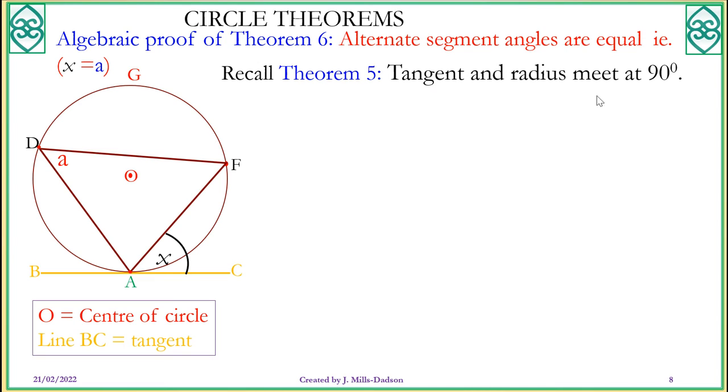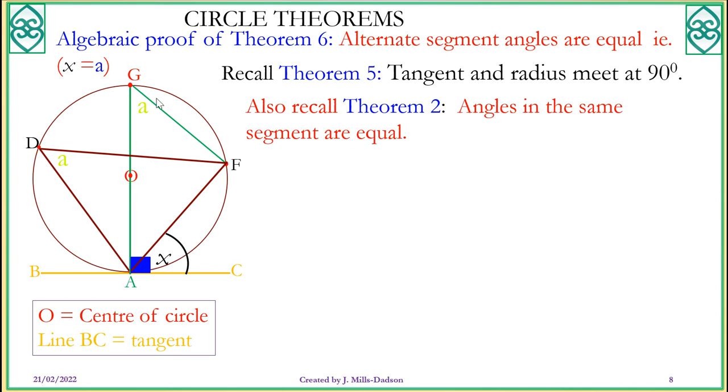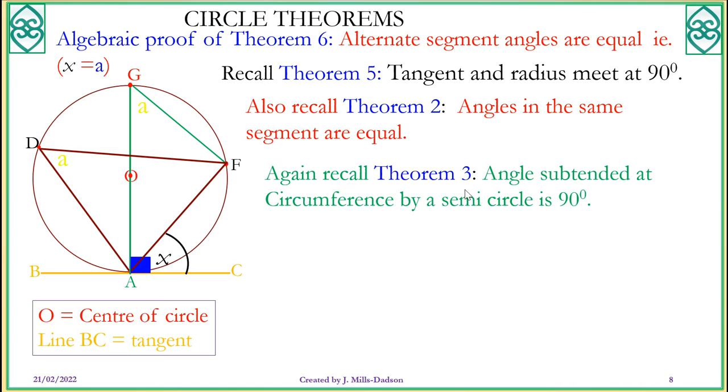First, from theorem 5, tangent and radius meet at 90 degrees. So this is the radius and I've extended it to form a diameter. So the radius and the tangent, this must be 90 degrees. Now I'm going to join GF with a chord. And you realize that I now have angle D and angle G. They are angles in the same segment. So if you recall theorem 2, angles in the same segment must be equal. So this is A, that is also A. And also, if you look at this, this is the diameter and I have a triangle in half of the circle. Again, recall theorem 3. Angles in the semicircle is right angle. So this side must be 90 degrees.